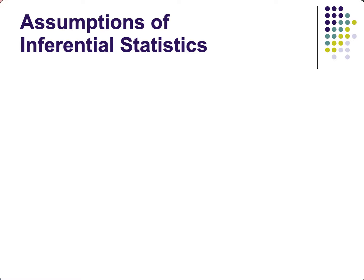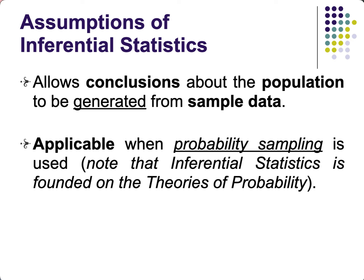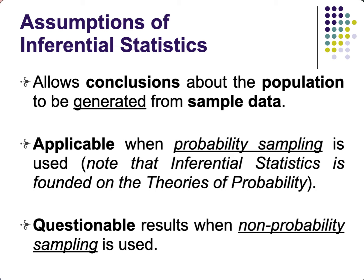What are the assumptions of inferential stats? It allows conclusions about the population and is applicable when you apply probability sampling — that is, sampling with randomness. Probability sampling includes simple random, systematic random, stratified, cluster, and multi-stage sampling. You can forcefully apply inferential stats using non-probability sampling such as convenience or purposive sampling, but results may not generalize well since sampling was not done randomly.